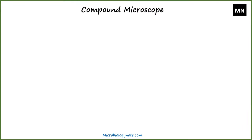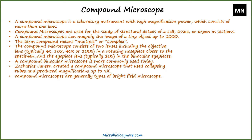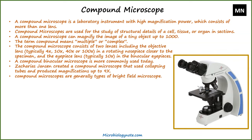Now let's talk about the compound microscope. A compound microscope is a laboratory instrument with high magnification power, which consists of more than one lens. The term compound means multiple or complex. A compound binocular microscope is more commonly used today. Compound microscopes are used for the study of structural details of a cell, tissue, or organ in sections.